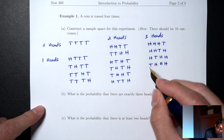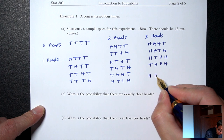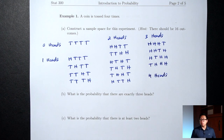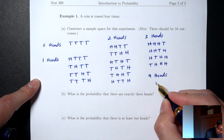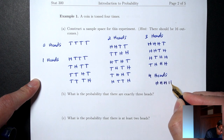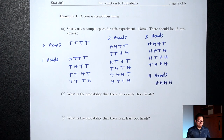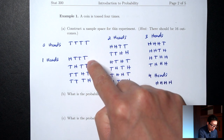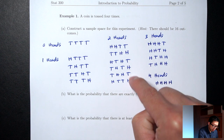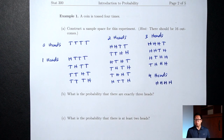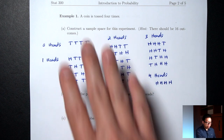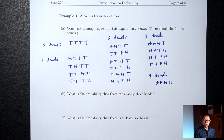There should be 16 outcomes total. Counting: 1 for zero heads, 4 for one head, 6 for two heads, 4 for three heads, 1 for four heads — that's 16. So we have all of them. Once we have the list of everything that could happen, we can answer probability questions.